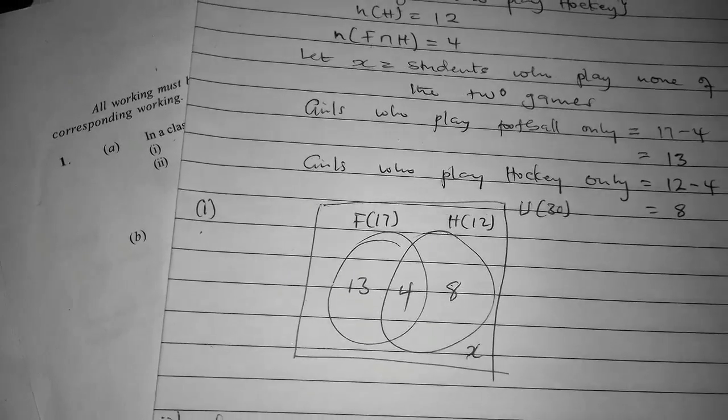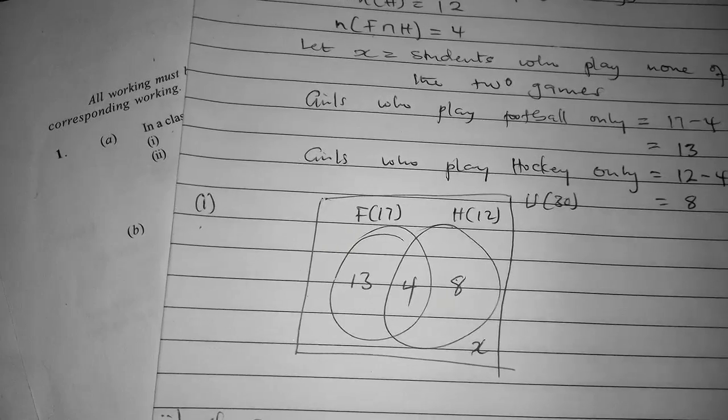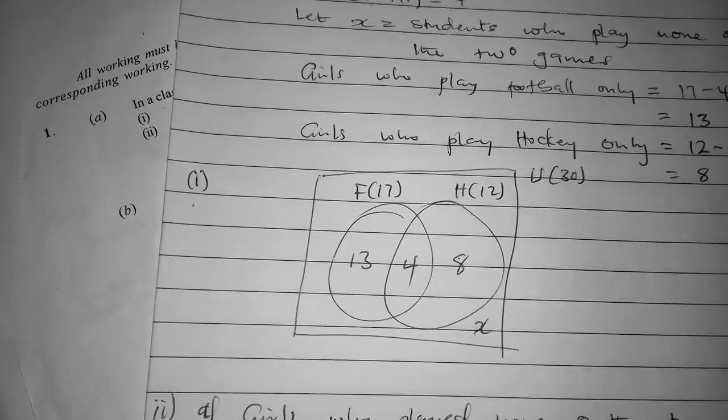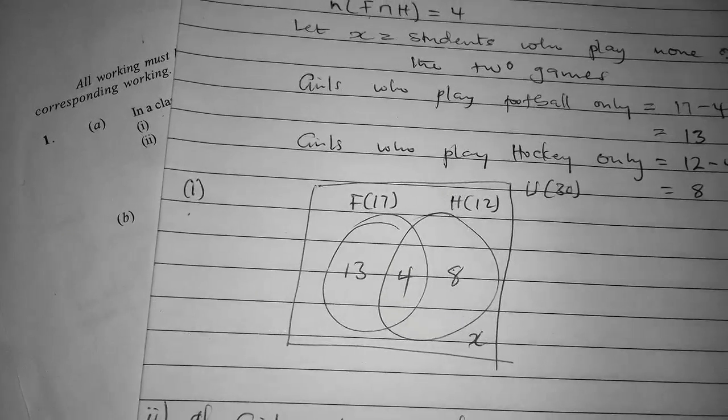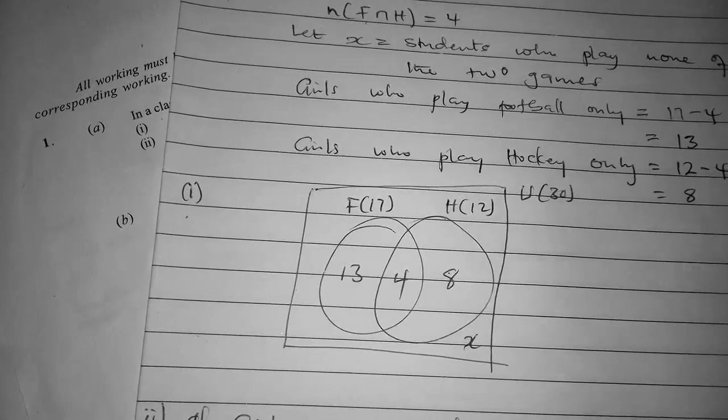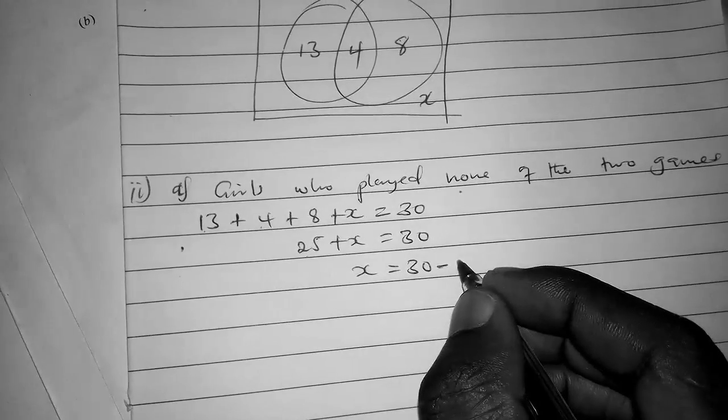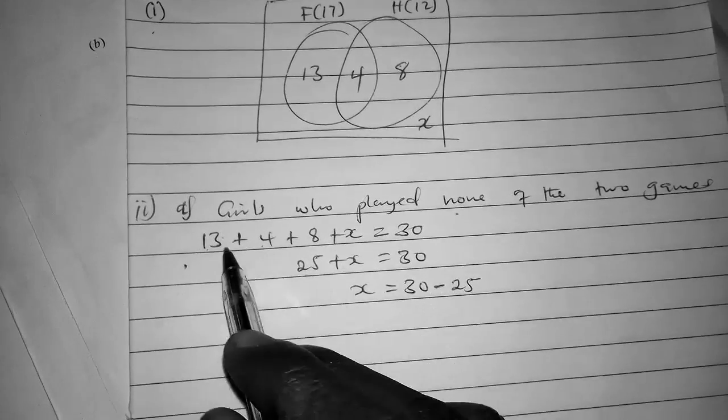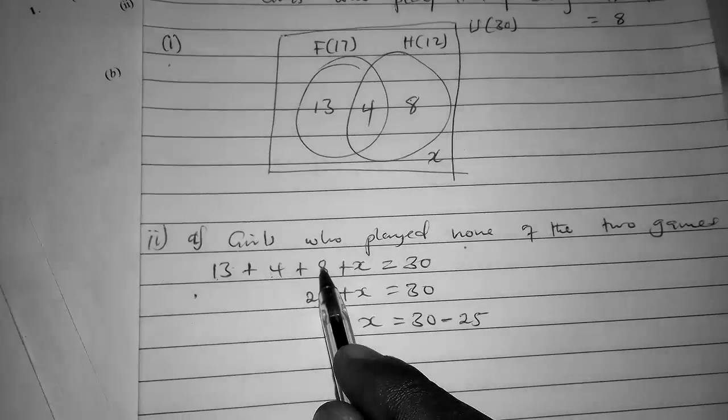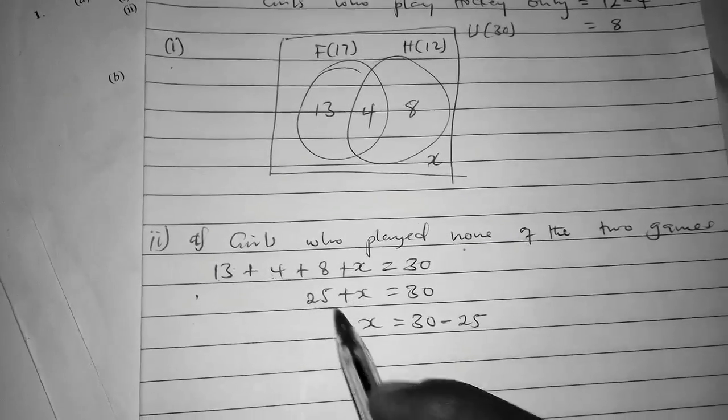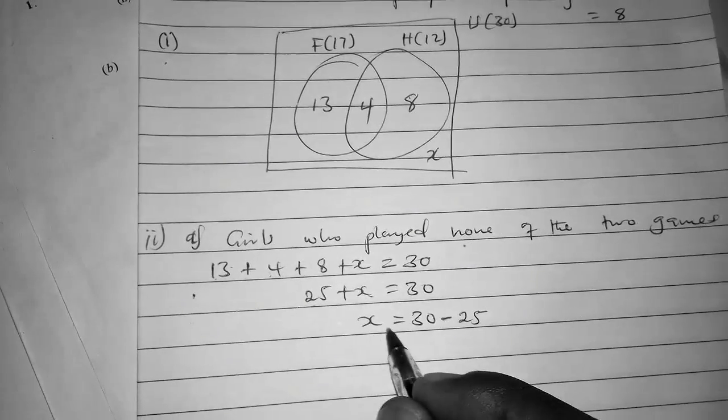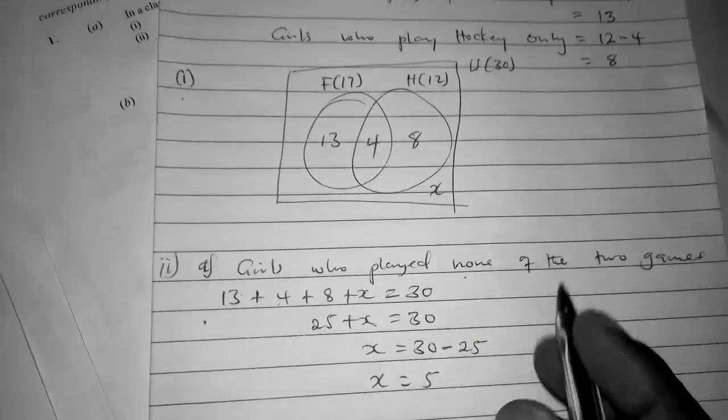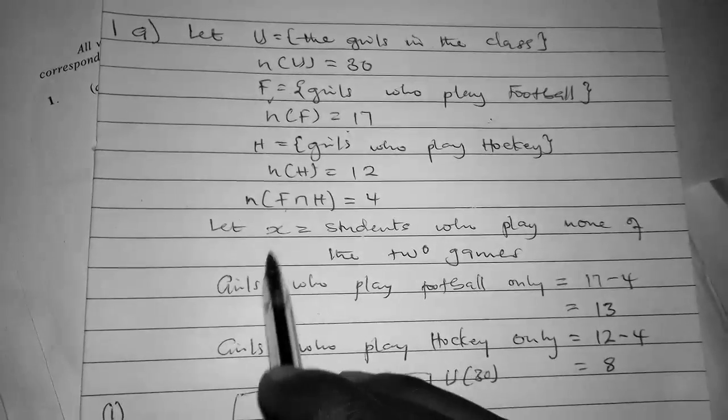13 + 4 gives you 17, and 17 + 8 gives you 25. So 25 + S = 30. To get S: 30 - 25 = 5. Therefore S = 5, which means 5 students played none of the two games.